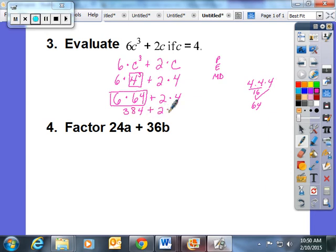6 times 64 is going to give you an answer of 384. I bring down my plus 2 times 4. I'm not done with all my multiplication, so I have 384 plus 2 times 4, which is a product of 8. When I do this last one, the answer should be 392.